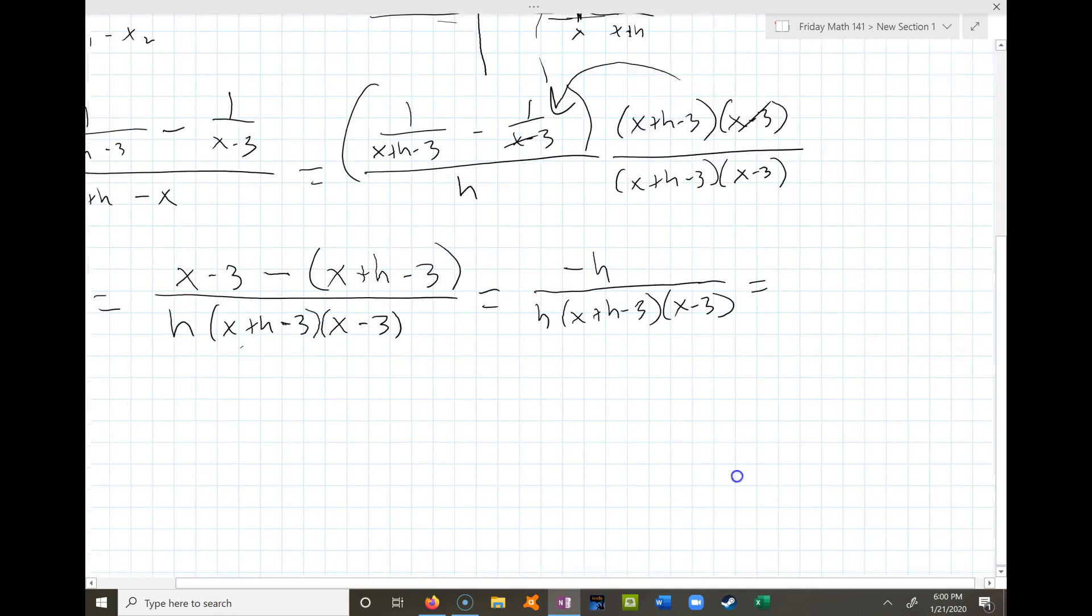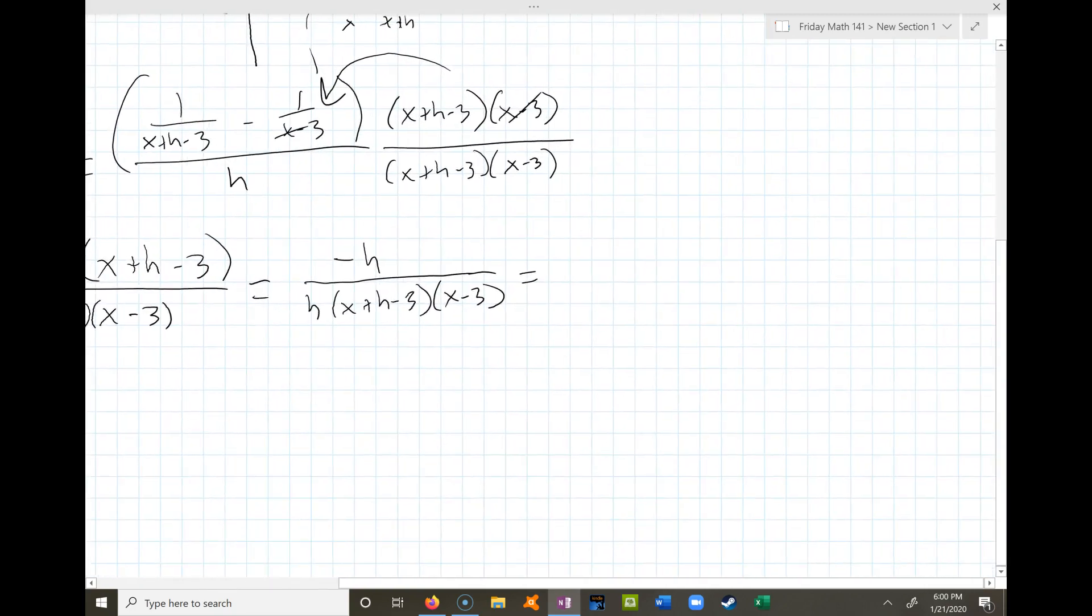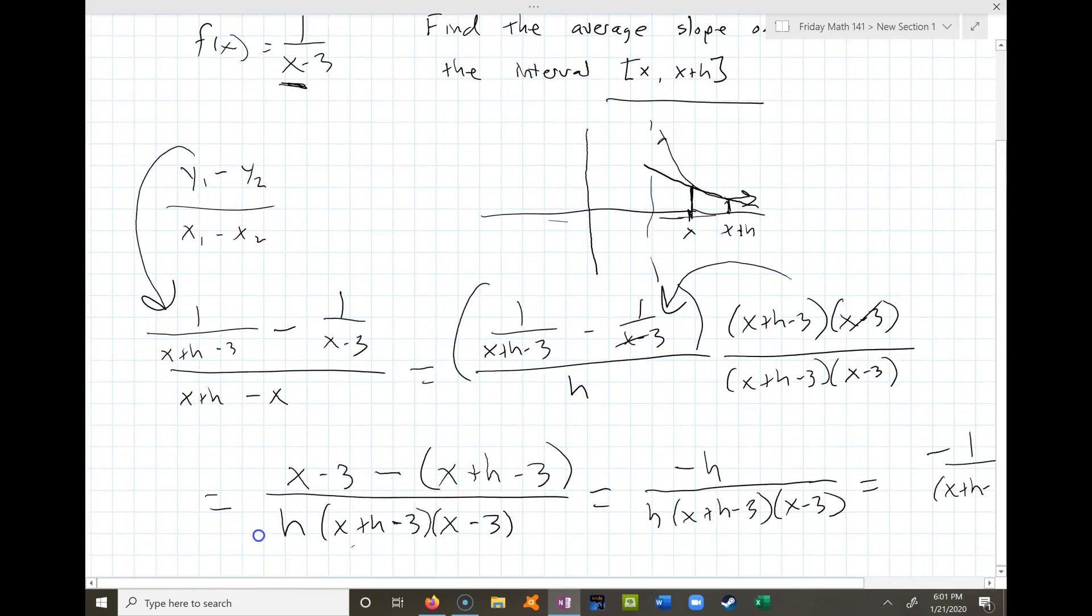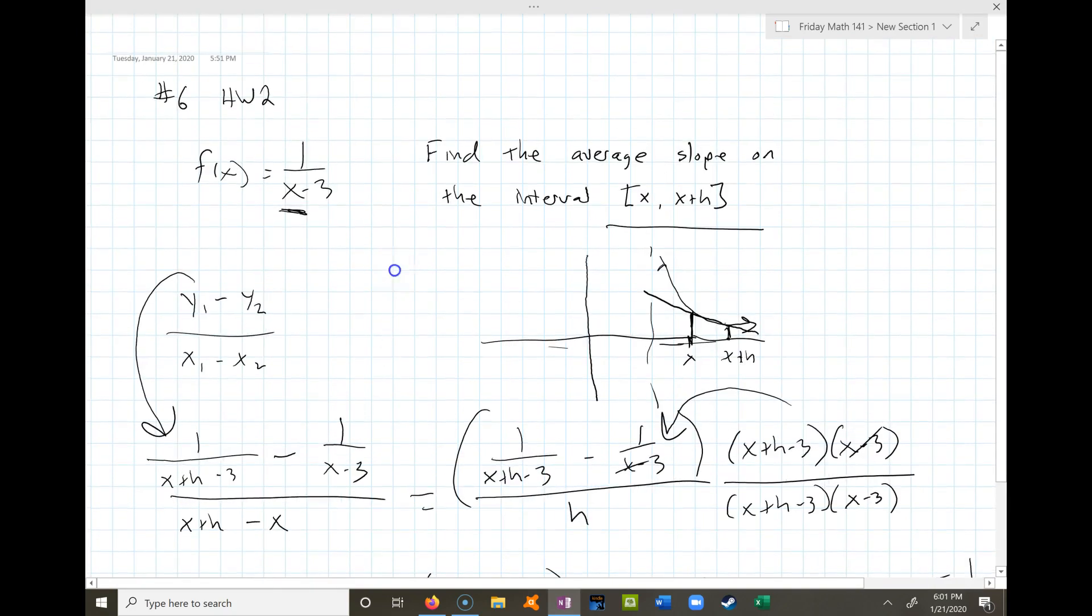Got an h on the bottom, got an x plus h minus three times x minus three. And now we see there's an h on top, an h on the bottom. h is a factor of the top, h is a factor of the bottom, so I can cancel them out. I'll be left with negative one over x plus h minus three times x minus three. And that's what you'd put into that little box. So that's homework two, number six.